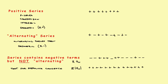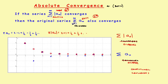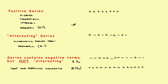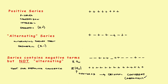Going back to the original rule: you were given an original series, you change it into an absolute value series, you show that the absolute value series converges, and then you can conclude that the original series converges too. If the original and the absolute value series both converge, that's absolute convergence.